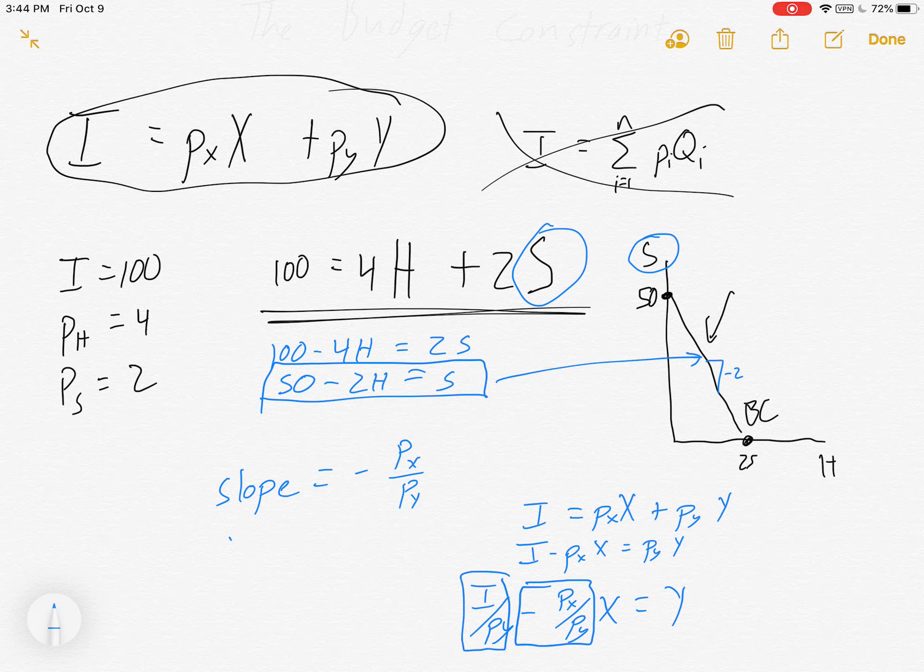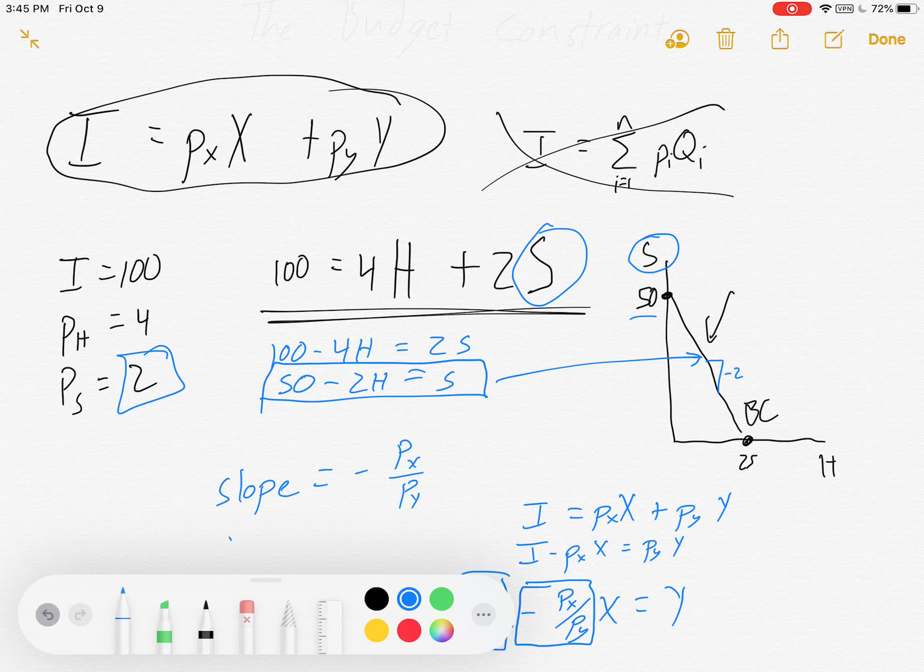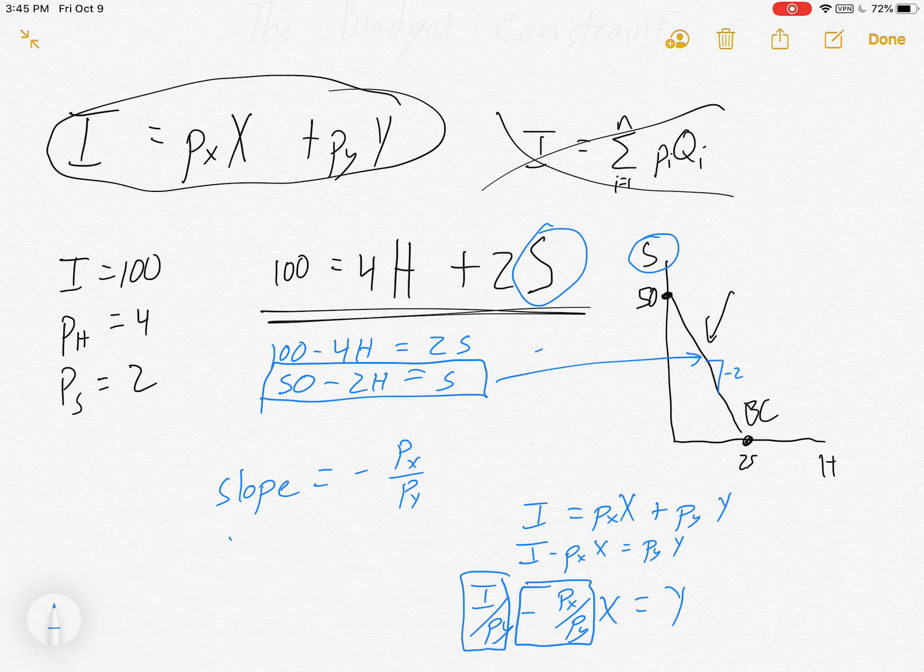Now the slope of this will always be minus P_X over P_Y and the intercept will be I over P_Y. Was that true in our numbers? Let's see. The price of our vertical axis was 2, I divided by 2, 100 divided by 2 is 50. We're good to go.